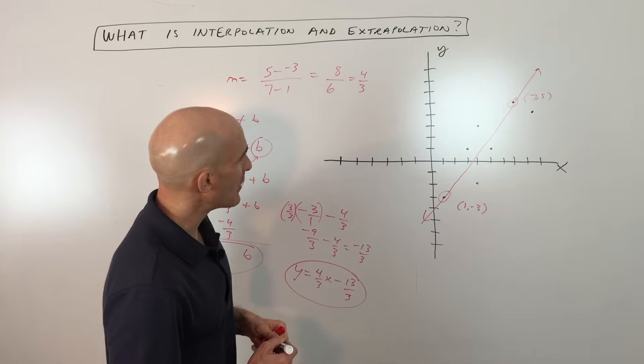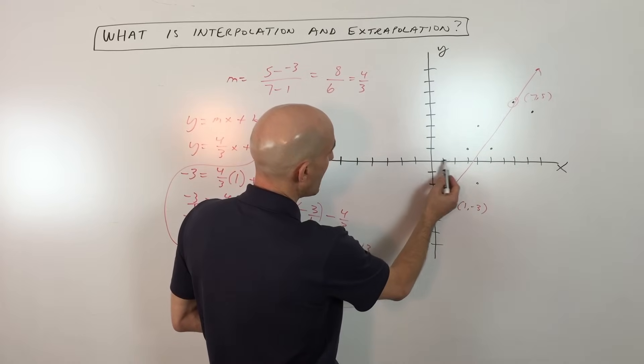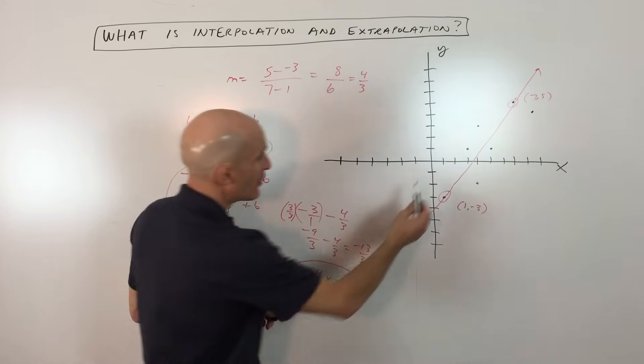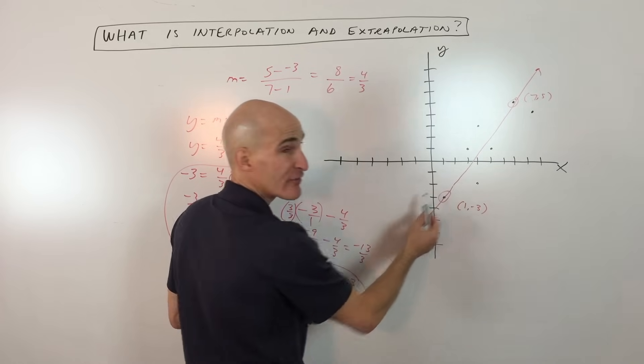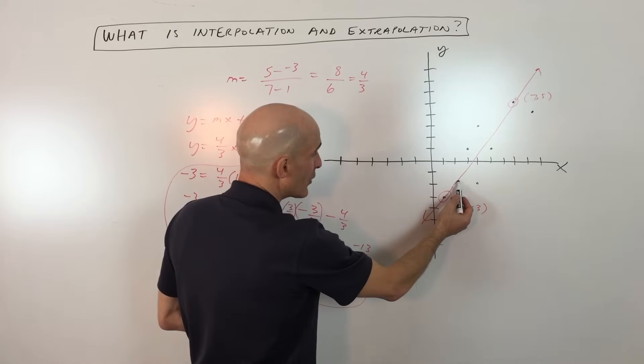You might say, well, I wonder if I was to pick a value, say for example, when x is 2, what would be the y value? We don't actually have a data point here where x equals 2. We could go down to that line of best fit and approximate it and say, look, looks like maybe negative 1.5 and then go ahead and use our equation to find out what that y value is.